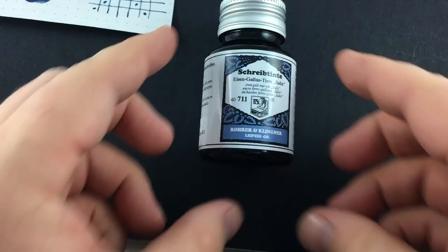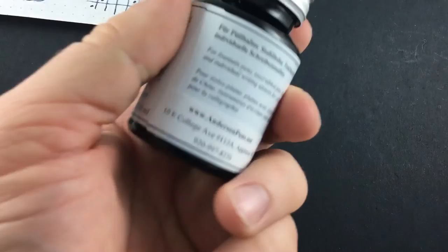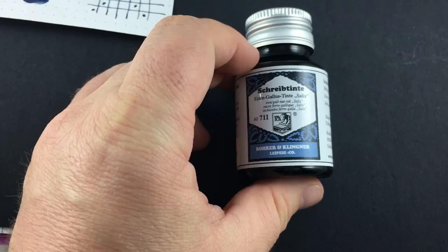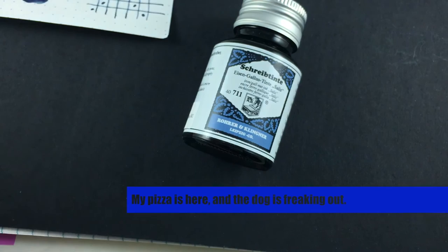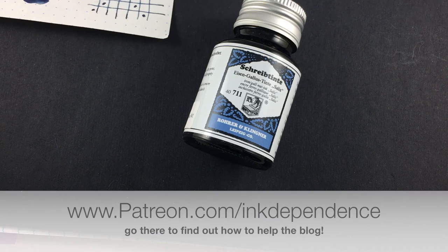So go find yourself a bottle of R&K Salix. That's your favorite distributor. I obviously bought this one from Anderson Pens. This is not a sample. I just, I think I got this at a pen show. I was like, ah, finally, I see some Salix. I'm going to get it. So I did. So anyway, there you go. This has been inkdependence.com. I'm Mike. This is Salix. And I will see you later. If you want to know how to contribute to the blog, please go to www.patreon.com slash inkdependence to find out how you can help support us. And I will see you later. Peace out.